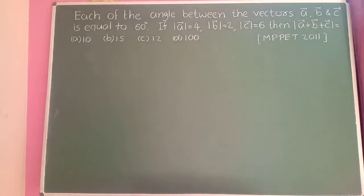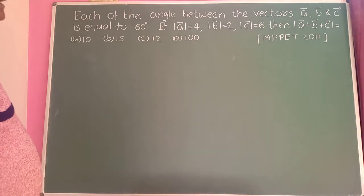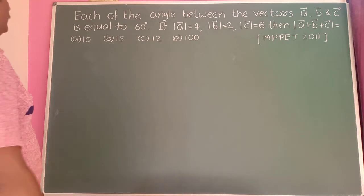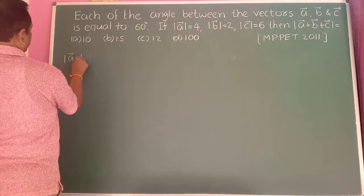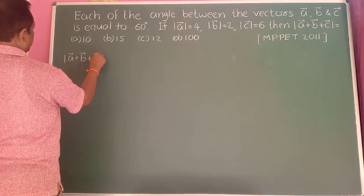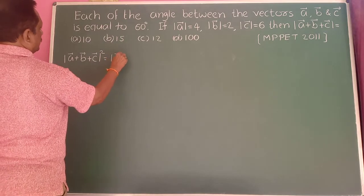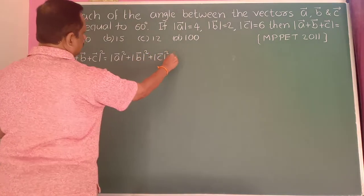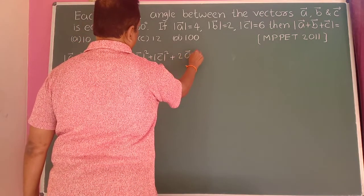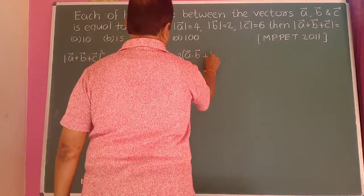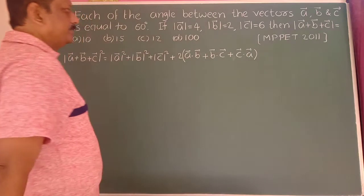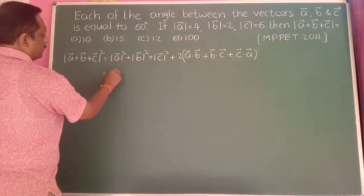If the angle between each pair of vectors a-bar, b-bar, and c-bar is 60 degrees, modulus of a-bar is 4, modulus of b-bar is 2, modulus of c-bar is 6, then what is modulus of a-bar plus b-bar plus c-bar? We use the formula: |a+b+c|² equals |a|² + |b|² + |c|² + 2(a·b + b·c + c·a).